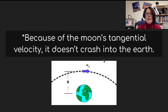Because of the moon's tangential velocity, it doesn't crash into the earth because it has this constant velocity. It's moving fast enough that it can keep falling, but not fall into the earth because it is following the curvature of the earth.